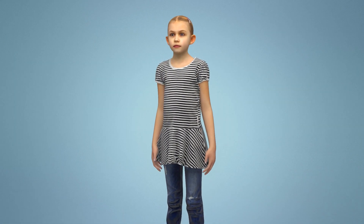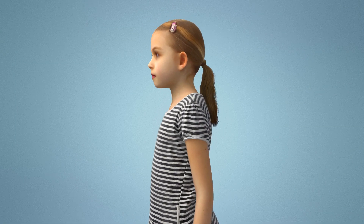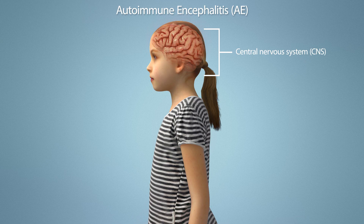Autoimmune encephalitis, or AE, is a group of central nervous system, or CNS, autoimmune disorders that occur when the body's immune system inappropriately attacks healthy brain tissue, triggering neurological and/or psychiatric symptoms.